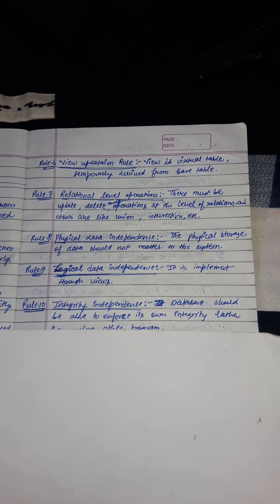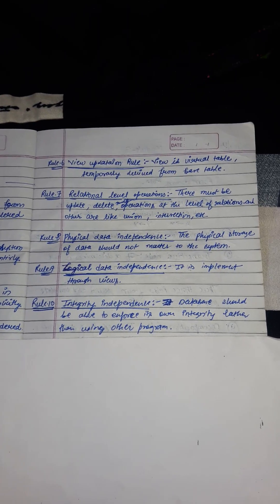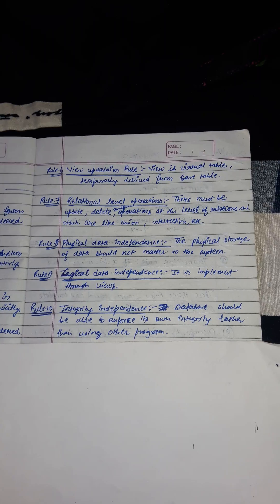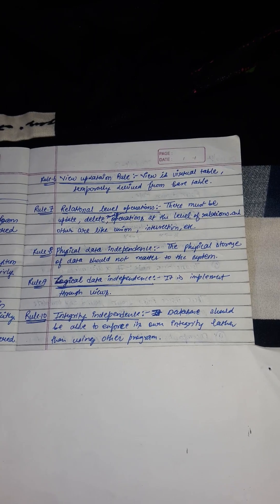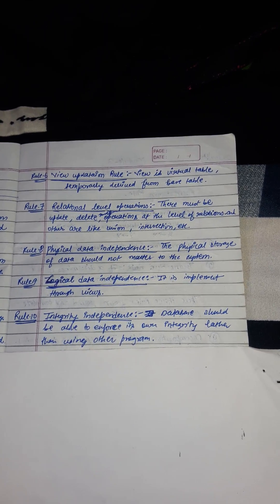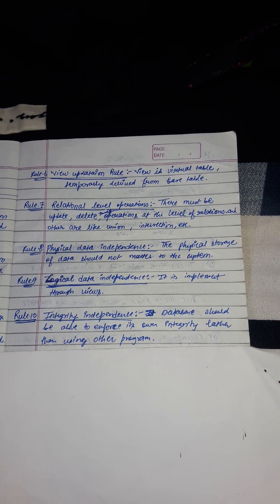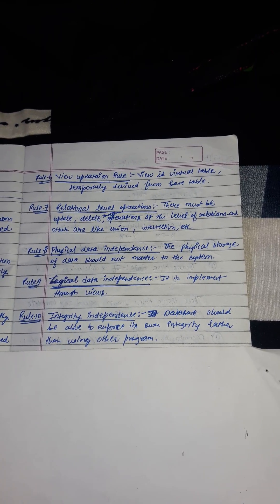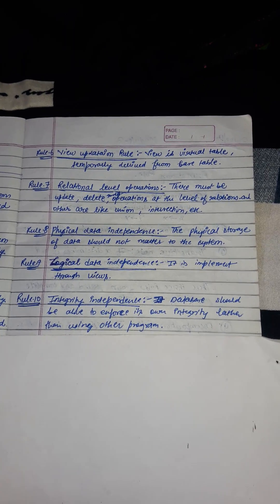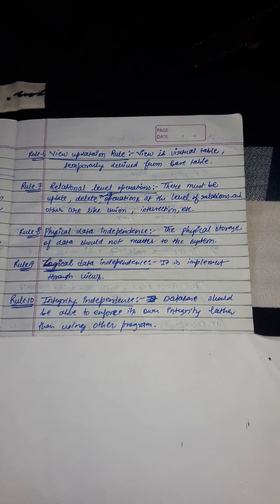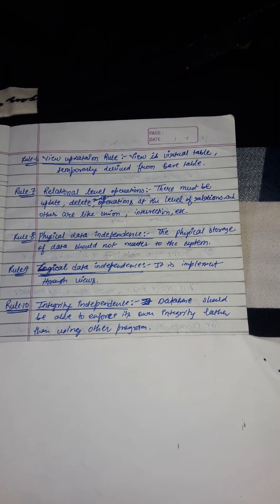Rule 10 is integrity independence. Data should be able to enforce its own integrity rather than relying on other programs. The database language like SQL should support constraints on user input to maintain database integrity. No component of a primary key can have a null value. If a foreign key is defined in one table, any value in it must exist as a primary key in another table. The database should be able to enforce its own correctness and consistency rather than using other programs.